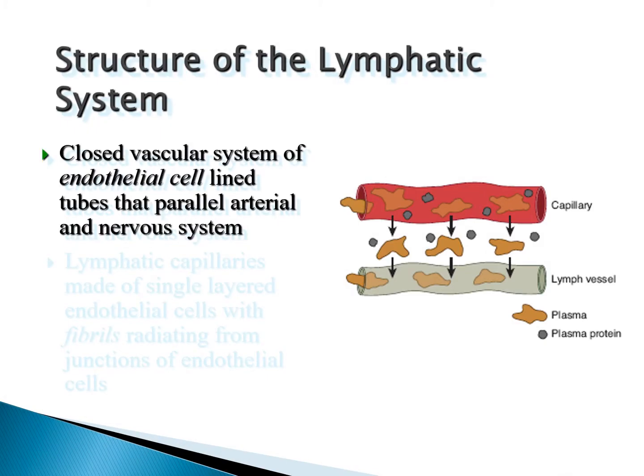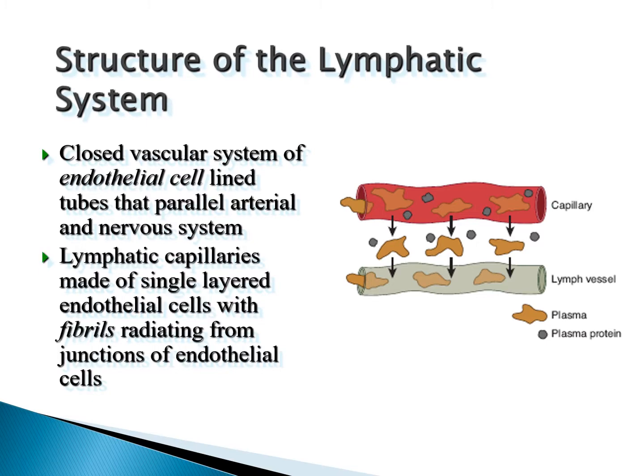Structures of the lymph system include a closed vascular system of endothelial-cell-lined tubes that parallel arterial and nervous systems. There are lymphatic capillaries, which are single-walled, single-layered endothelial cells with fibrils radiating from junctions. You can think of the vascular system as the one that carries everything back through vessels, and then you also have lymphatic vessels running alongside blood vessels such as arteries and veins, carrying plasma proteins back to the heart.